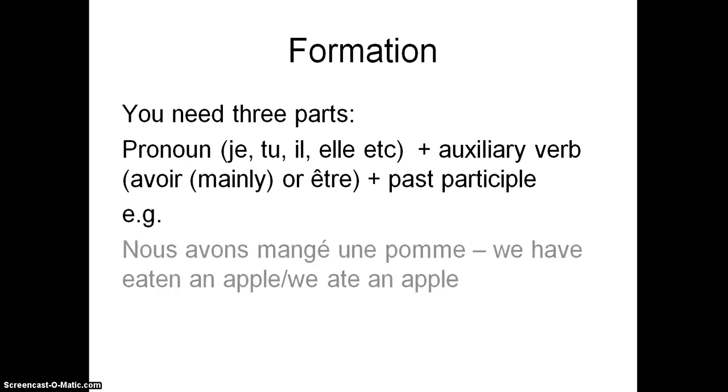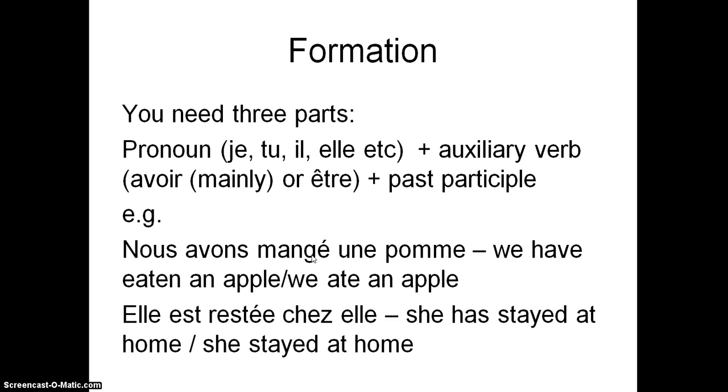So for example, nous avons mangé une pomme, we have eaten an apple, or we ate an apple. So we have the pronoun here, the auxiliary avoir, and then a past participle, mangé. Another one: elle est restée chez elle, she has stayed at home or she stayed at home. We have our pronoun, our être this time, and our past participle. Now past participles, whether you use avoir or être, are formed in exactly the same way.